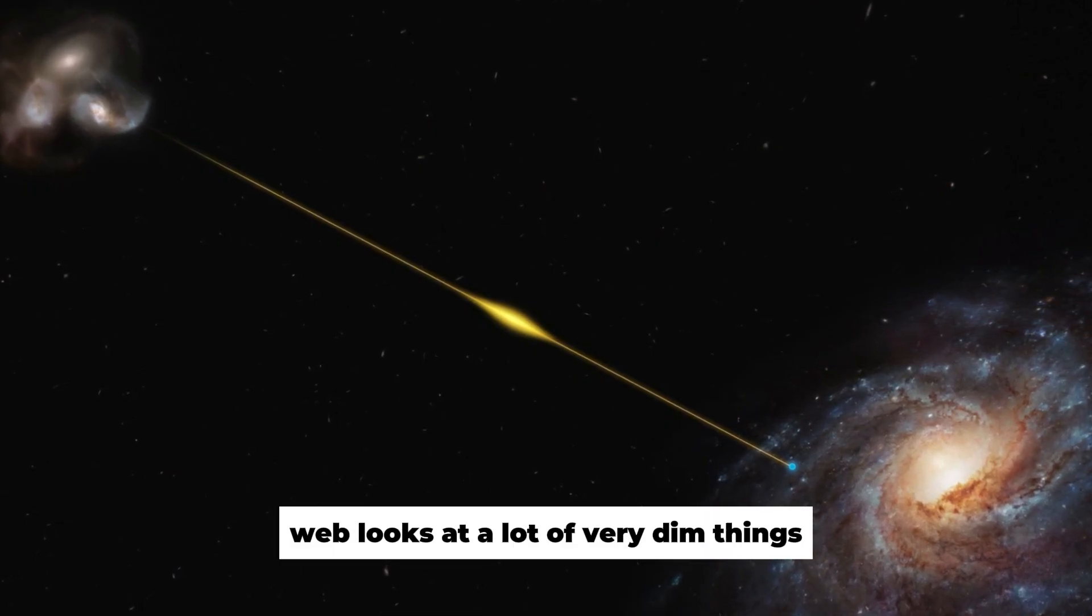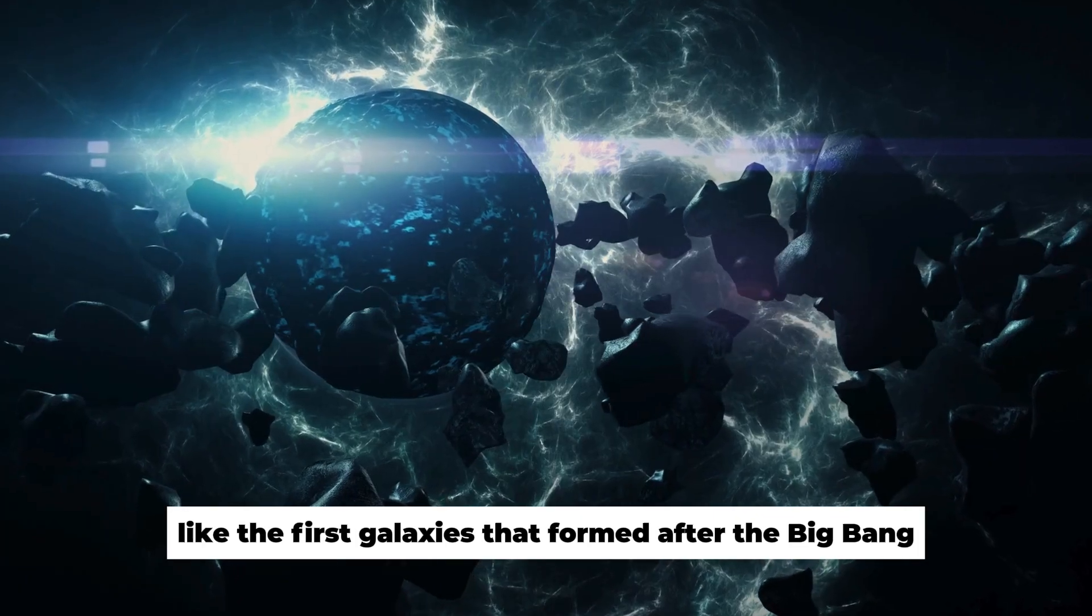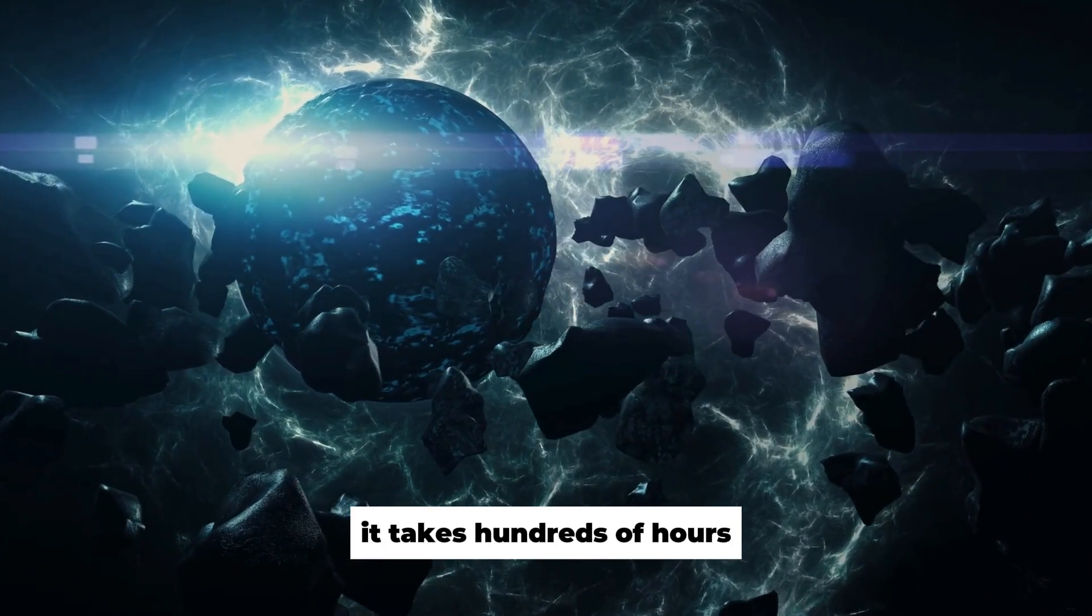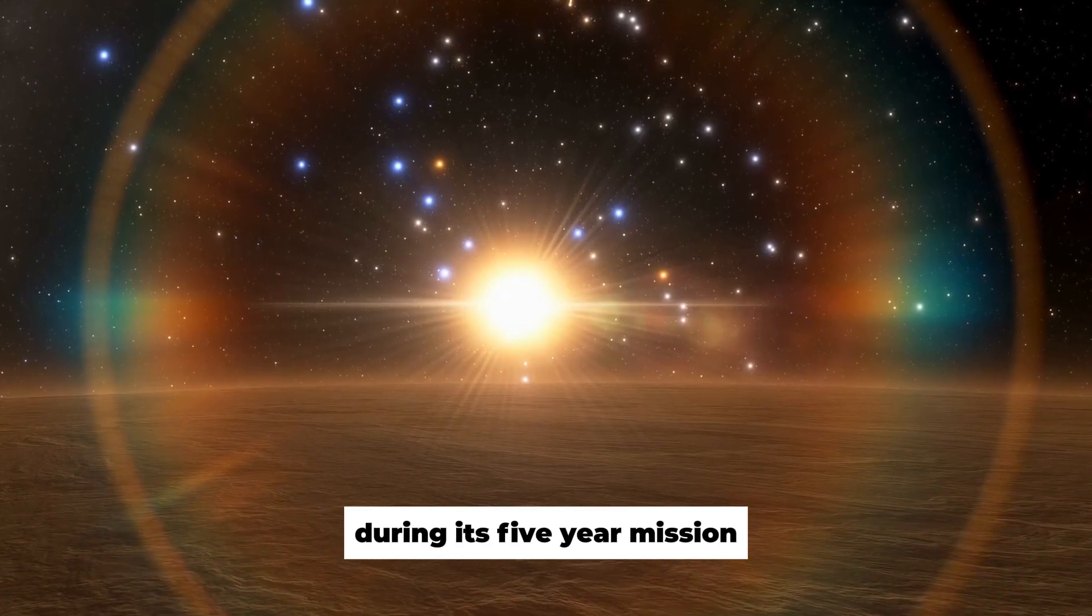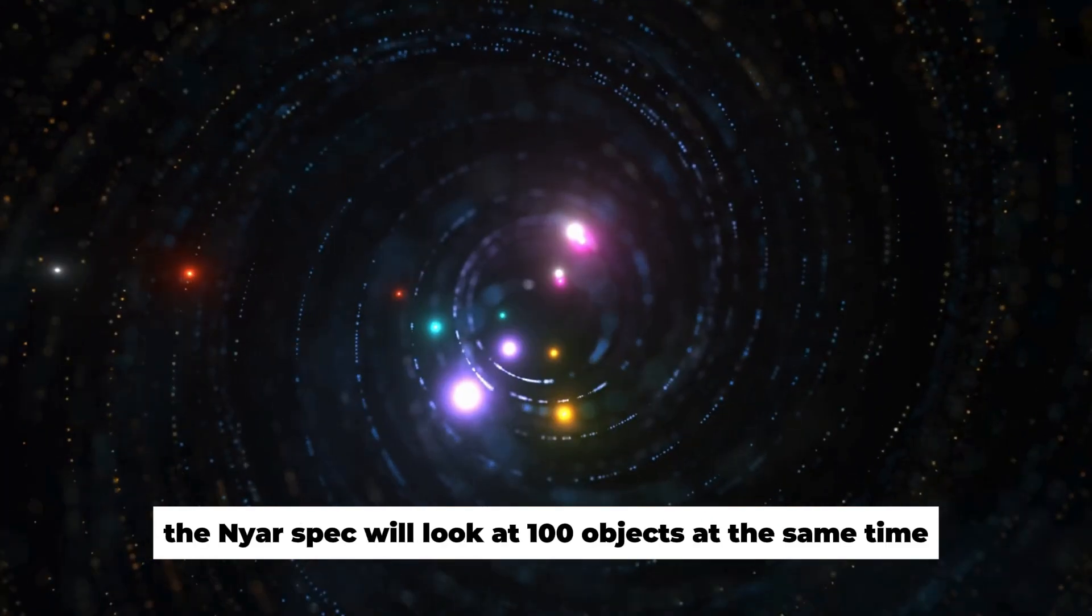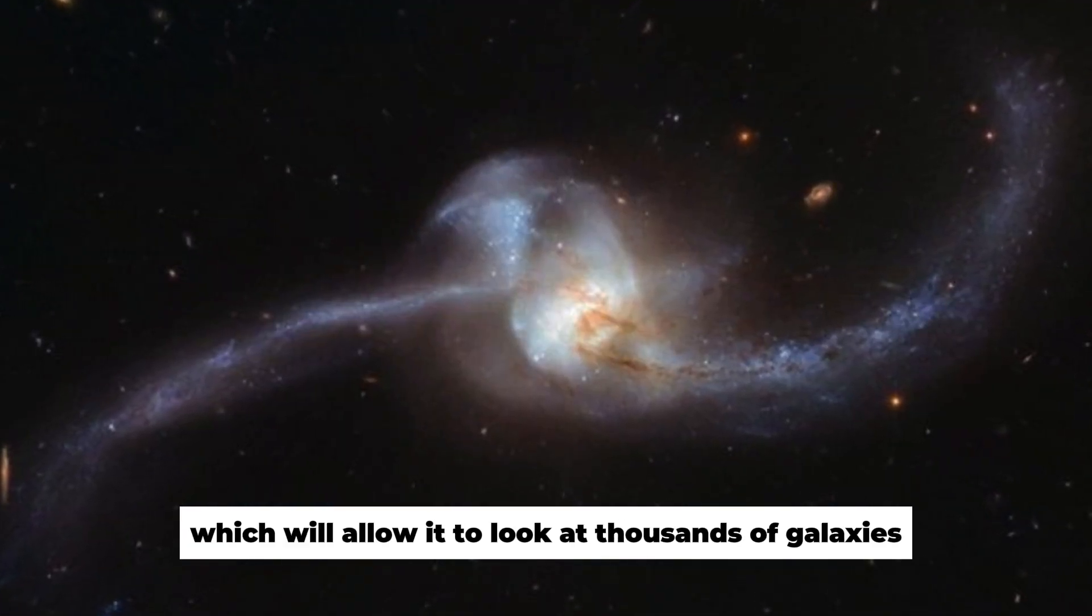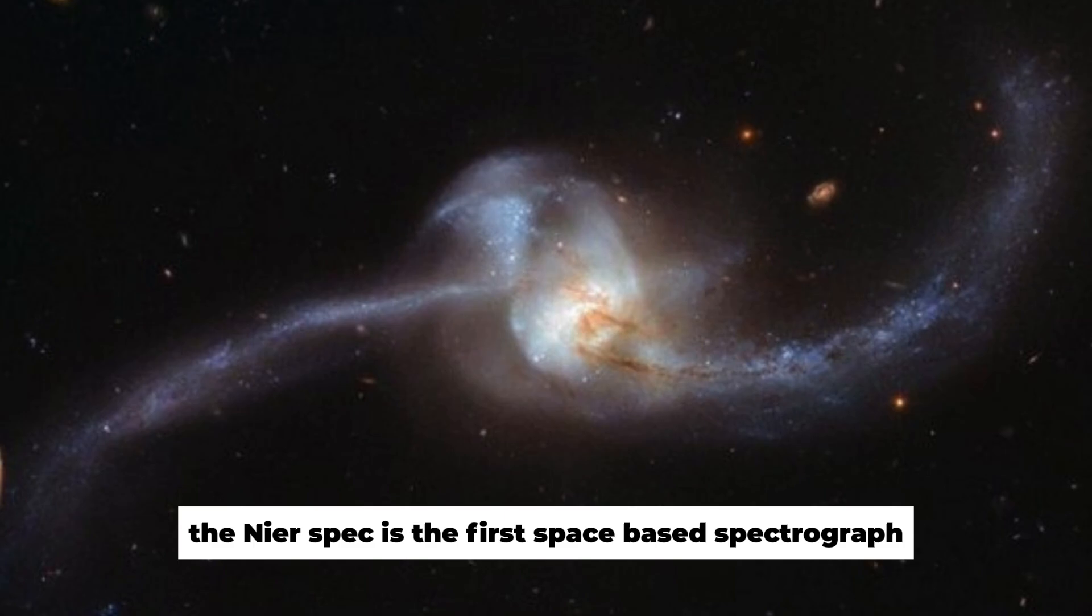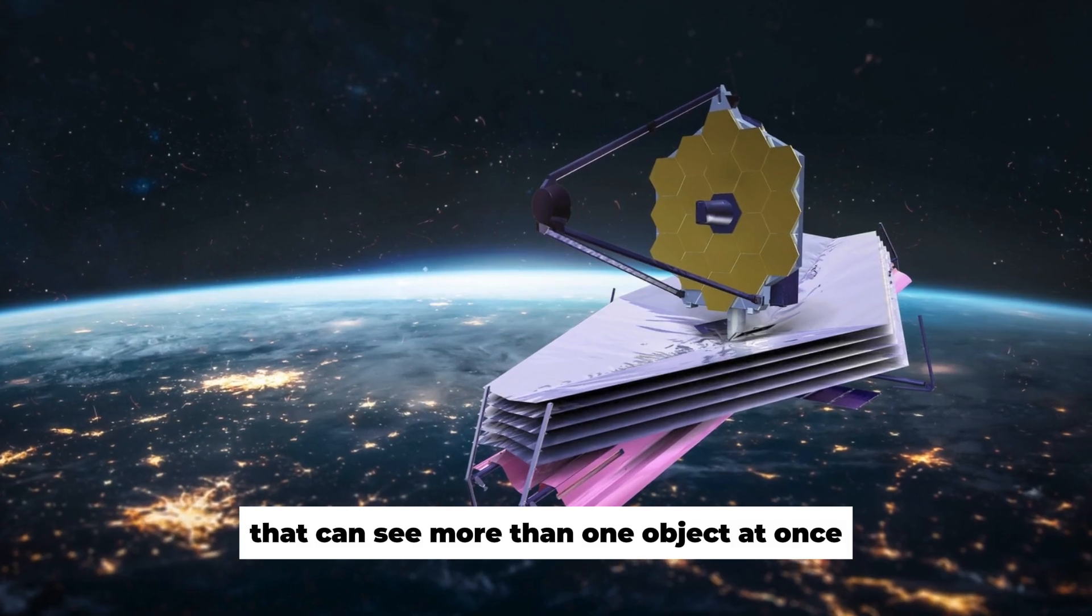Webb looks at a lot of very dim things, like the first galaxies that formed after the Big Bang. It takes hundreds of hours for Webb's huge screen to gather enough light to make a spectrum. During its five-year mission, the NIRSPEC will look at 100 objects at the same time, which will allow it to look at thousands of galaxies. The NIRSPEC is the first space-based spectrograph that can see more than one object at once.